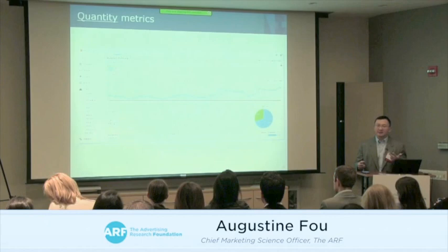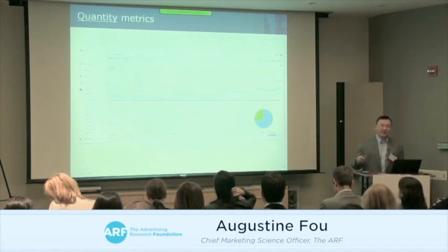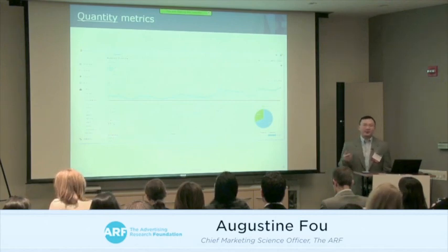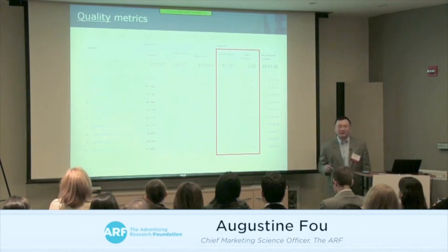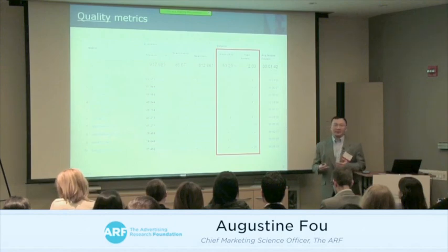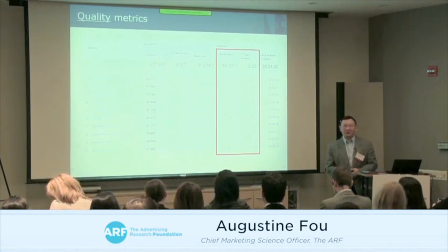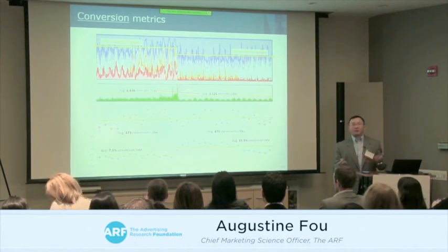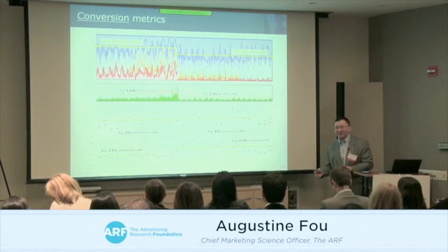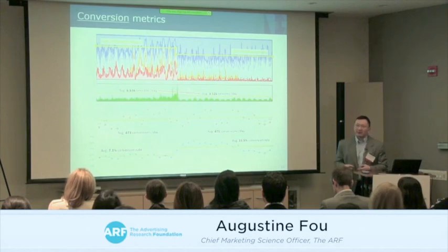There are three types of metrics I want to highlight: quantity metrics, quality metrics, and conversion metrics. Quantity metrics tell you how many visitors or ad impressions you had. Quality metrics — like bounce rate and pages per visit — tell you whether people engaged. Conversion metrics tell you whether they actually bought something from an e-commerce site.